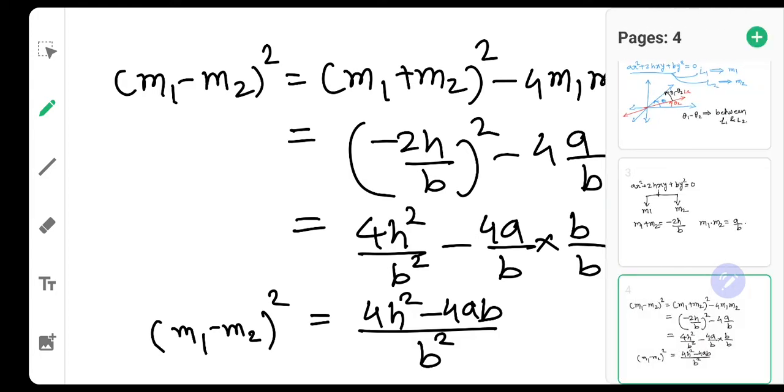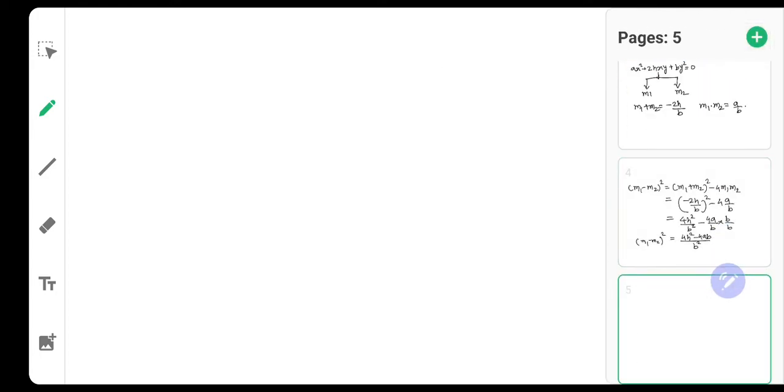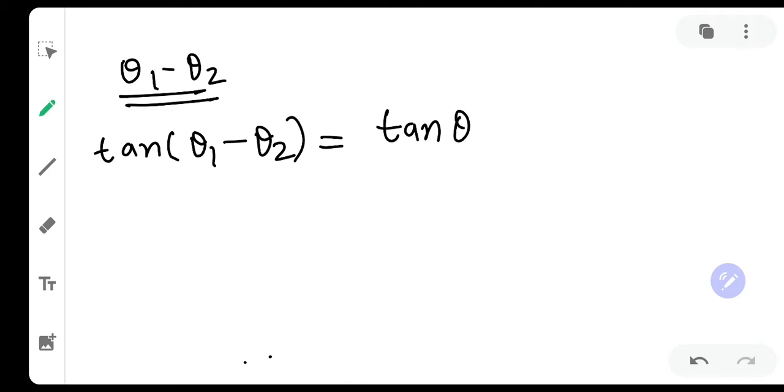Now let us move and add one more page. So we needed θ1 - θ2. How do we get that? We will simply say tan(θ1 - θ2). The compound angle formula is simply (tan θ1 - tan θ2)/(1 + tan θ1·tan θ2).